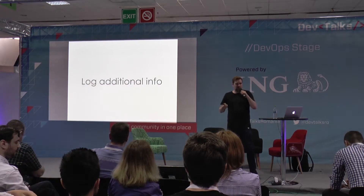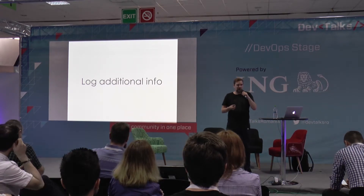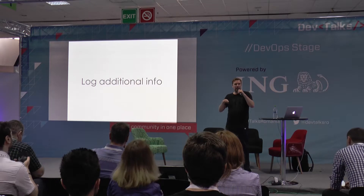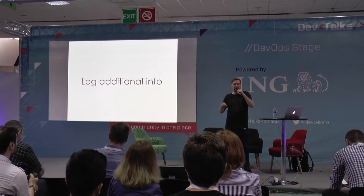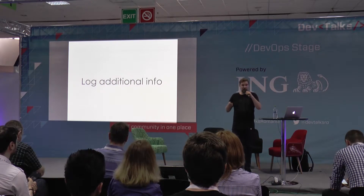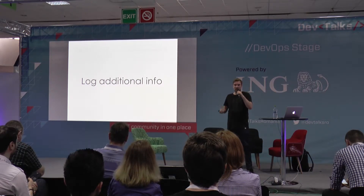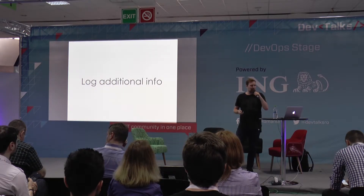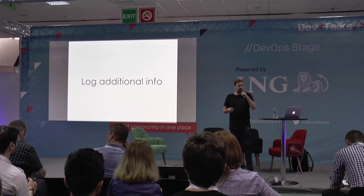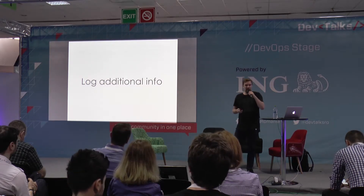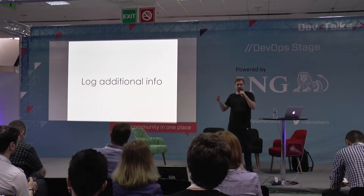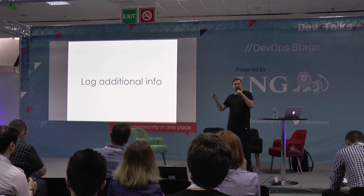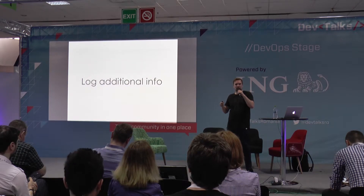It is very useful from my experience to also log additional information with these errors, to make it easier for you to identify why this error happened. Additional information could be the user agent of the web browser that did the request, the IP address — maybe the anonymized IP address — the session ID, maybe the location of the user, the request headers, a process ID if you have a cron job. There's lots of information in addition to just the stack trace that can be useful for identifying and debugging why the error happened.